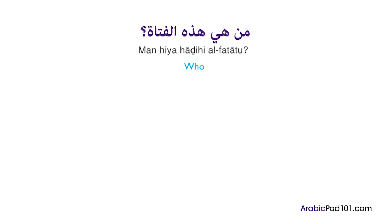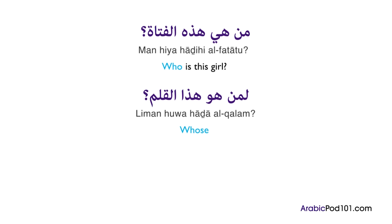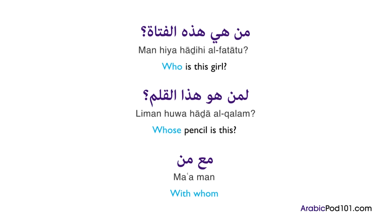Now it's time for Carol's tips. If someone unexpected is knocking at your door, the common question you can ask is: من هذا؟ — 'Who is this?' in a polite way. The very casual way is just: من؟ — which is more informal but can be used, as long as your tone is cheerful; otherwise it will sound a bit rude. Let's review all the ways to translate 'who' in Arabic: من (who), لِمَن (whose), and مع من (with whom).